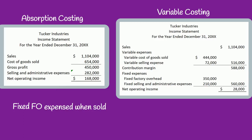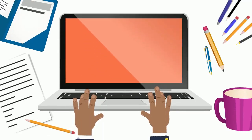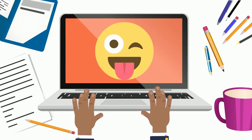The fixed factory overhead is deducted on the income statement in the period in which the units are sold. Under variable costing, all of the fixed factory overhead is expensed on the income statement when the items are made.